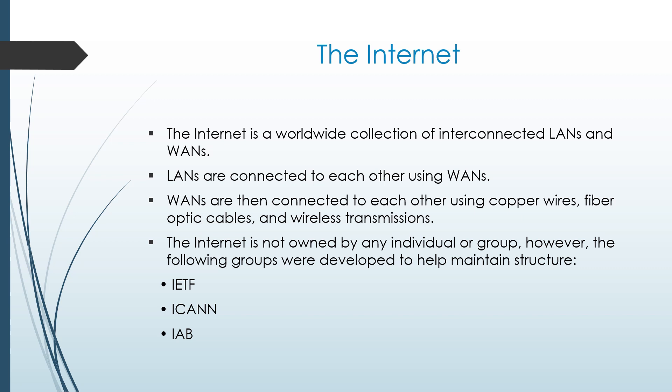The internet is a worldwide collection of interconnected LANs and WANs. LANs are connected to each other using WANs, and are then connected using copper wires, fiber optic cables, and wireless transmissions.